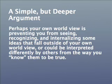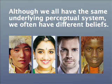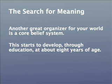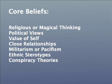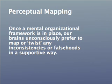All of this is part of a simple but deeper argument. Perhaps your own world view is preventing you from seeing, recognizing, and internalizing some ideas that fall outside of your own world view, or could be interpreted differently by others from the way that you know them to be true. Although we all have the same underlying perceptual system, we often have different beliefs, and there are consequences. The final framework is the search for meaning — the building up of a core belief system. This starts to develop through education at about age eight: religious or magical thinking, political views, values of self, and so on. Our brains unconsciously map incoming information in a way that's supportive of that framework, even if that information is false, contradictory, or inconsistent.